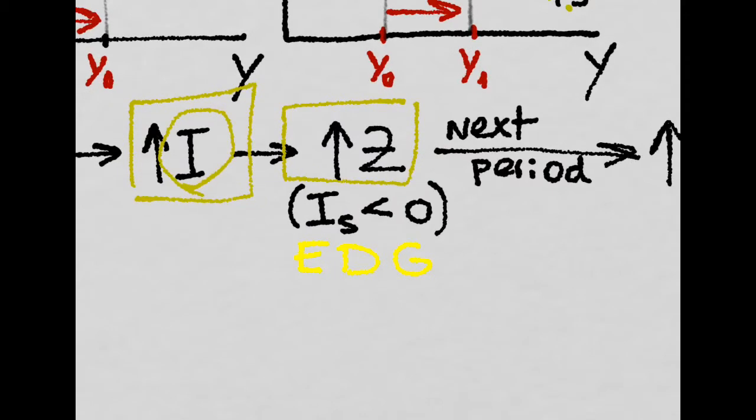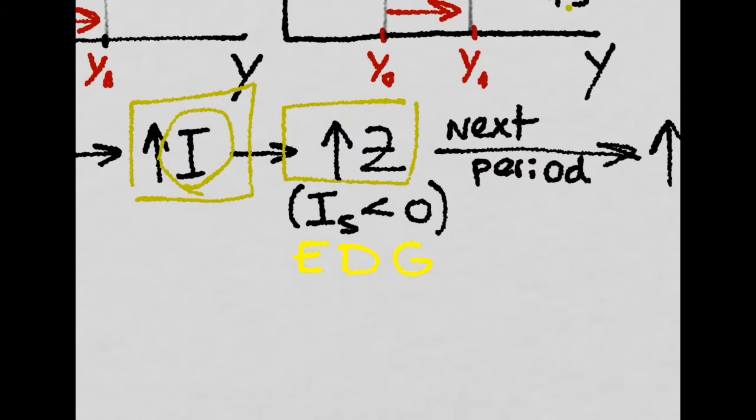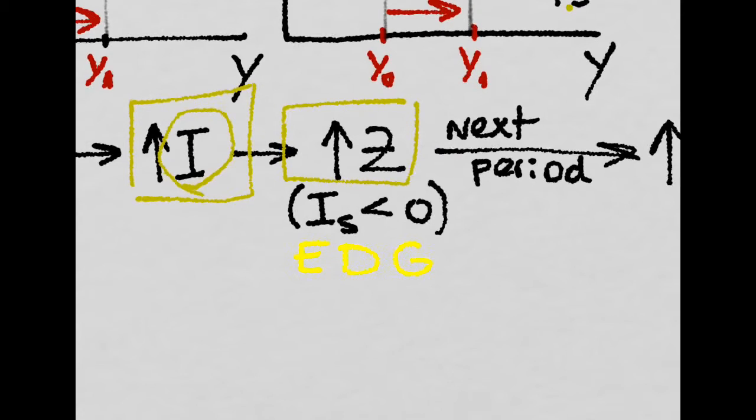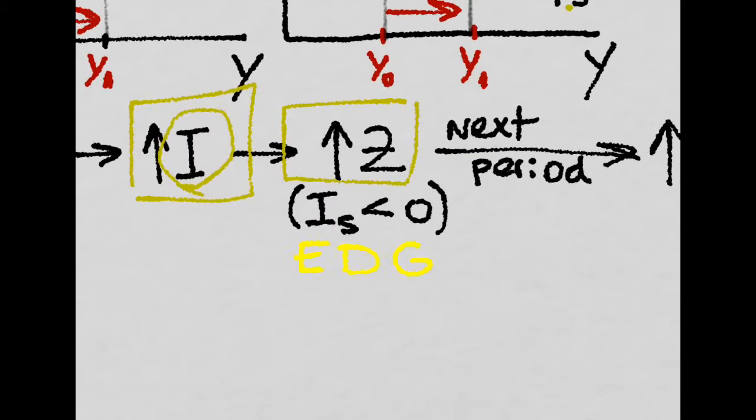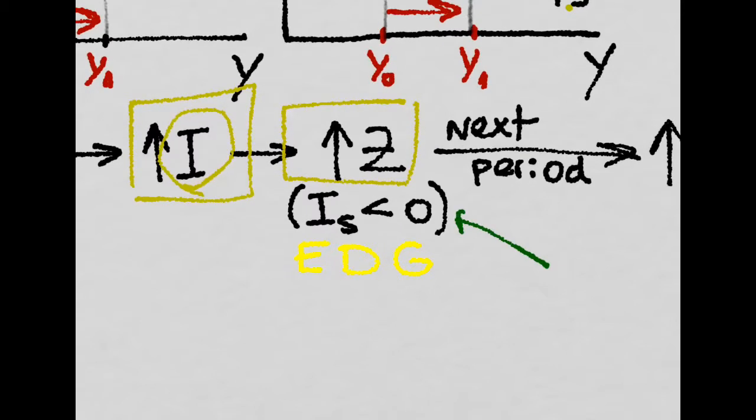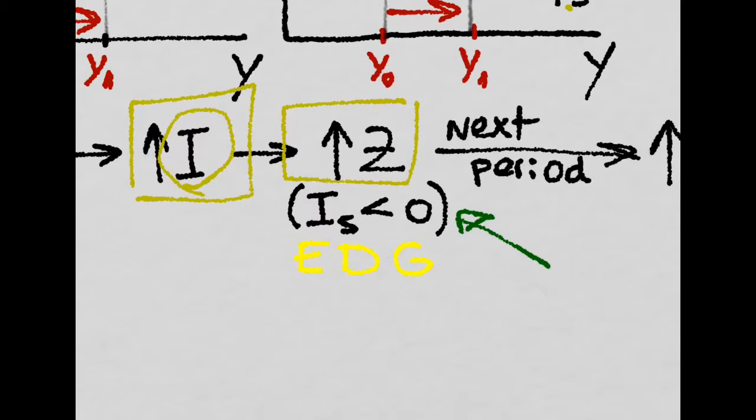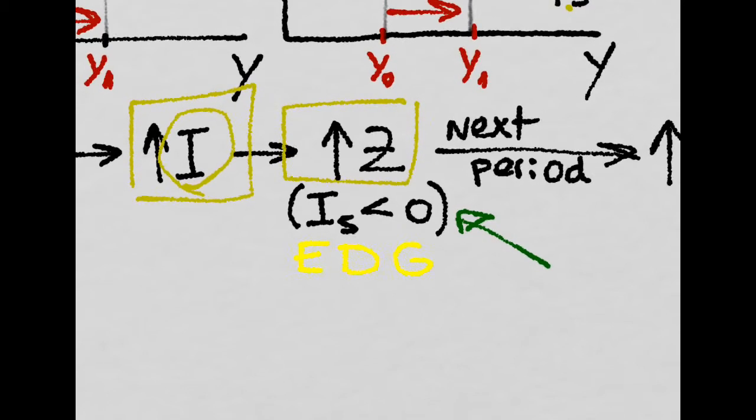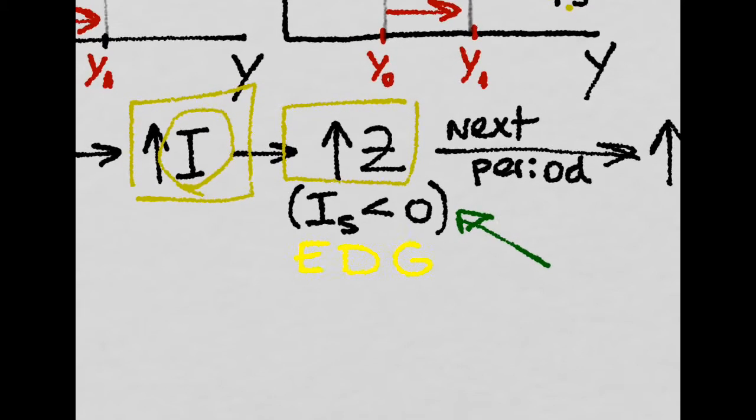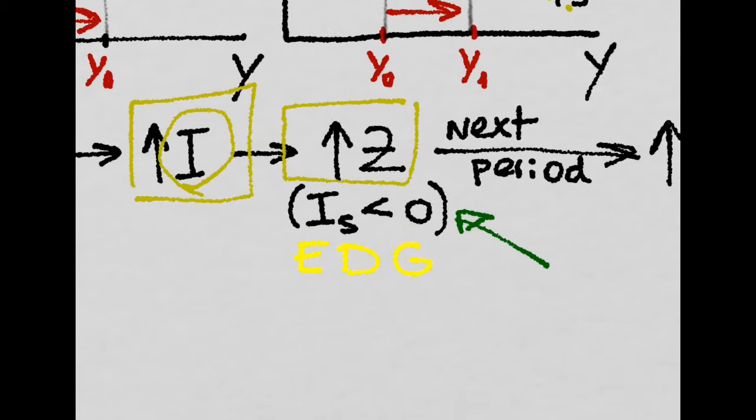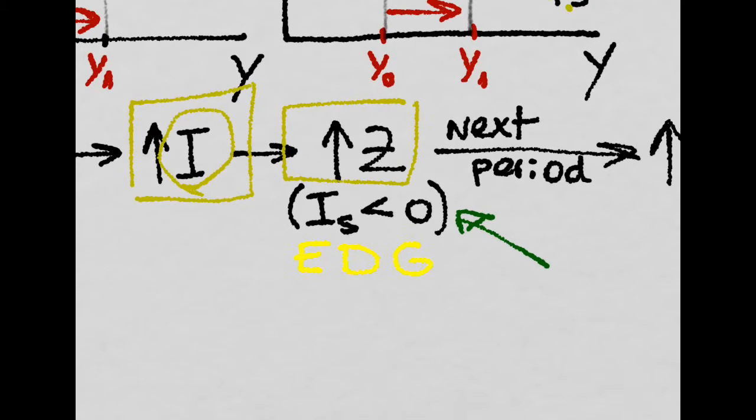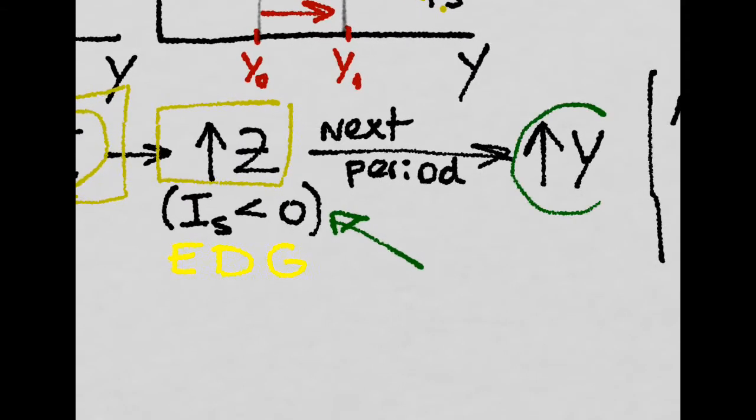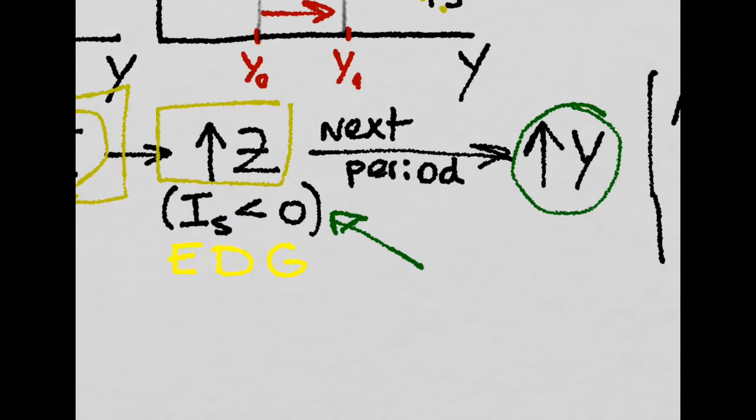That means that for this period, firms will be overwhelmed by the demand. So they will have to lower their inventories. They will have to use their stored inventories in order to be able to cope with the excess demand. But in the next period, they will be able to adjust output in order to meet the demand.